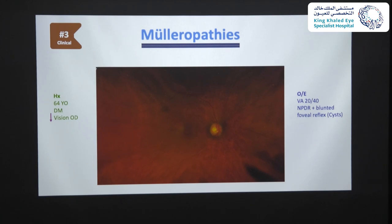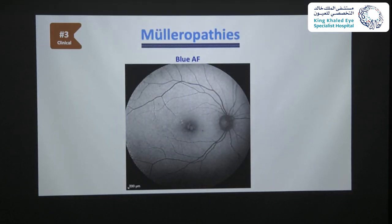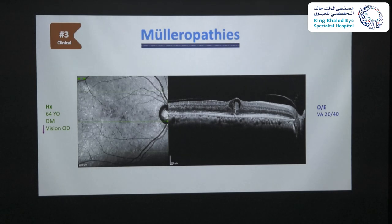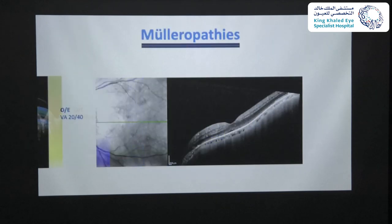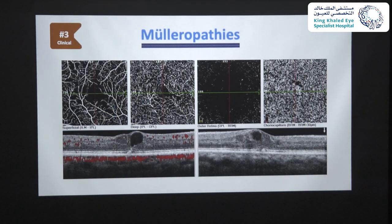The third muelleropathy case was a 64-year-old diabetic presenting with decreased vision in his right eye. VA was 20/40. He had mild PDR and altered foveal reflexes with foveal cysts. A 55-degree fundus autofluorescence image was unremarkable apart from foveal hyper-autofluorescence due to displaced macular pigment by the cysts. The OCT was really interesting: a foveal cyst filled with hyperreflective material connected to a tiny sharp-angled PED, with disruption of the external limiting membrane and ellipsoid zone. OCTA showed undetectable flow signal in superficial and deep slabs, with no macular neovascularization.